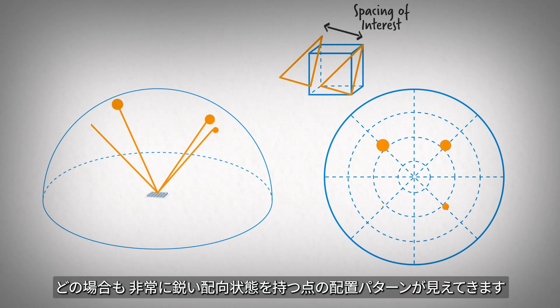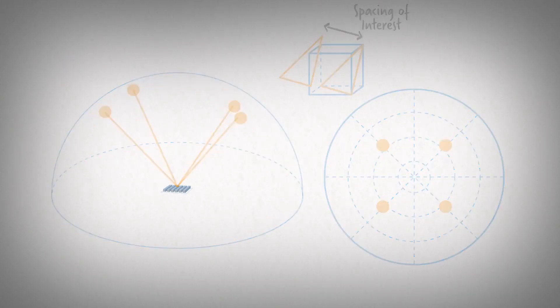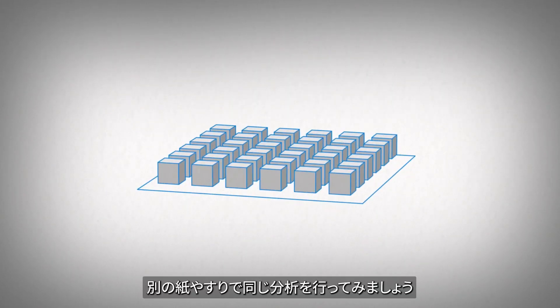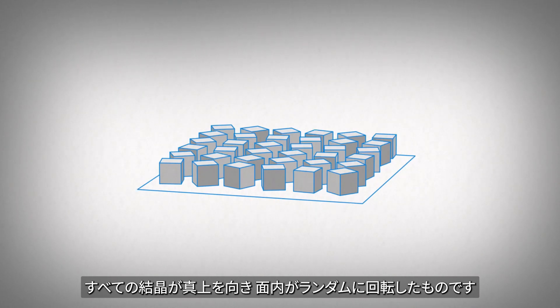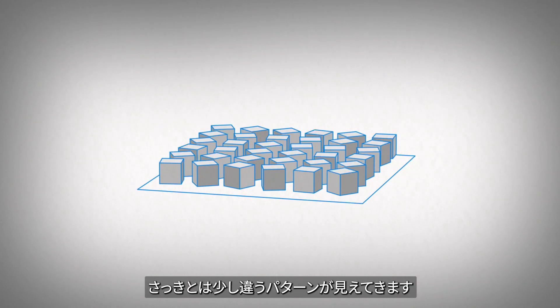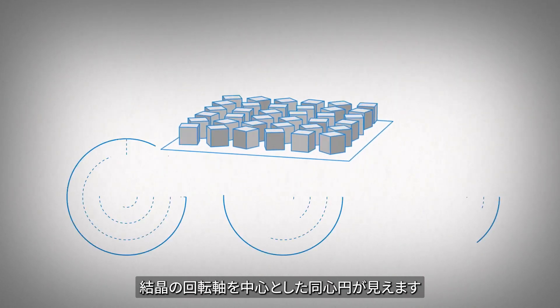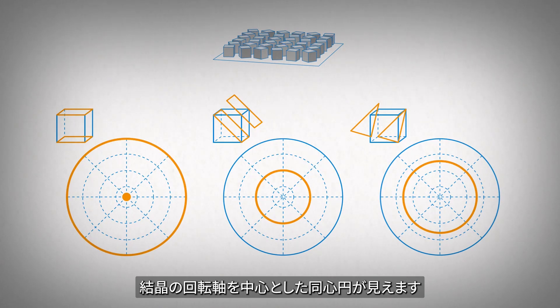In all cases, we see a spot pattern emerge with very sharp orientation. If we now perform a similar analysis on another piece of sandpaper where all the crystals are pointing straight up, but they are randomly rotated, we see a slightly different pattern emerge. We see concentric circles centered on the rotation axis of the crystals.